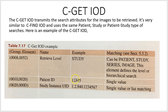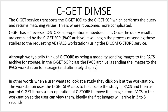Each study has its own UID, generated from the accession number. It's looking for this patient and this particular study — that might correspond to the chest x-ray for Mr. Smith. The C-GET DIMSE C-GET service transports the C-GET IOD to the C-GET SCP, which performs the query and returns matching values.